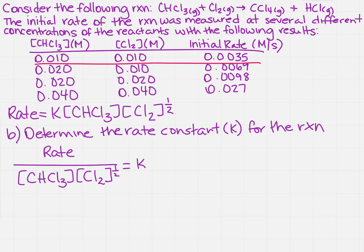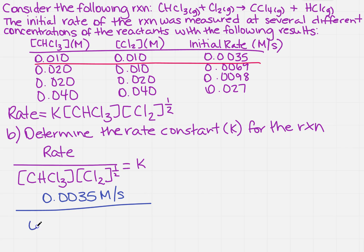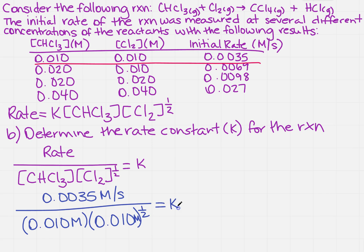So what is the rate? Well, the rate is 0.0035, and we know that's in M per s. And what is the concentration of the CHCl3? Well, it is 0.010 molar. And then I need to multiply that by the 0.010 molar to the one-half. And that's going to give me K.